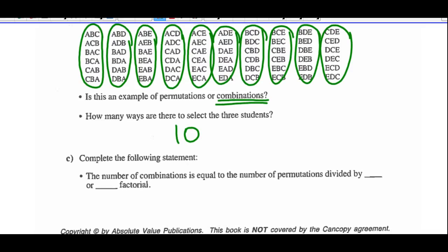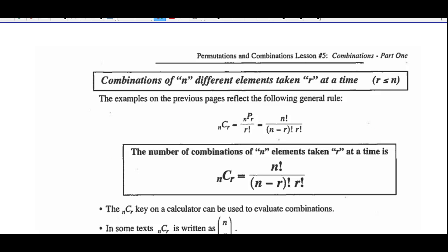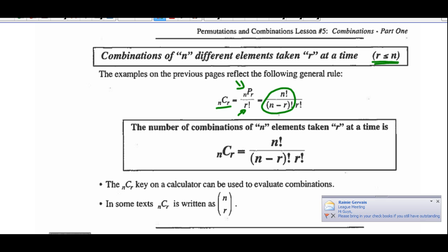Complete the following statement: the number of combinations is equal to the number of permutations divided by 6. 60 divided by 6 is 10. 6 is the same as 3 factorial — 3 times 2 times 1. So we come up with this formula for combinations. Combinations of n different objects taken r at a time, where r is less than or equal to n. This restriction tells us we could never choose 12 objects given 10 to start with. So if you have 10 objects, you must choose 10 or less. nCr is the same as nPr divided by r factorial.